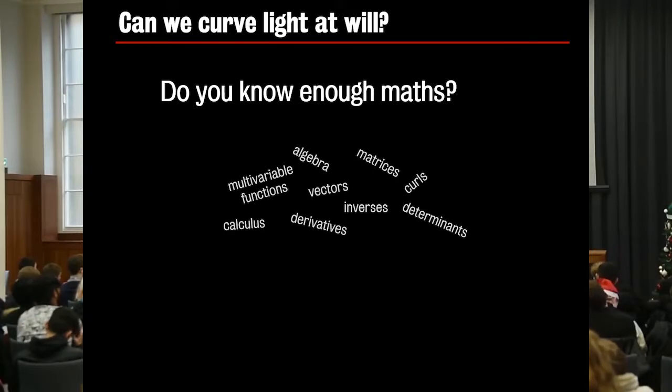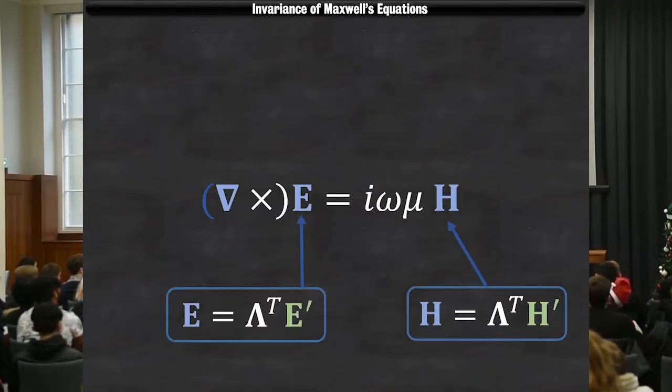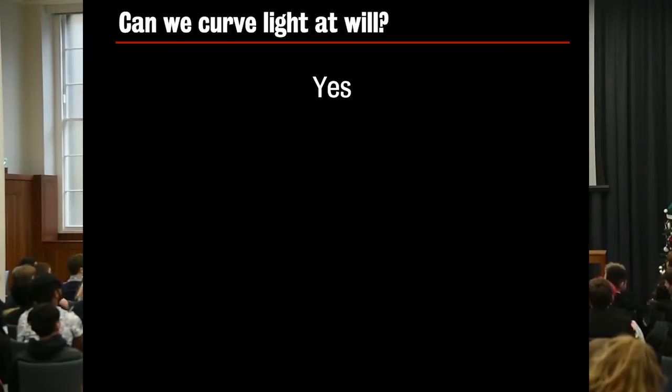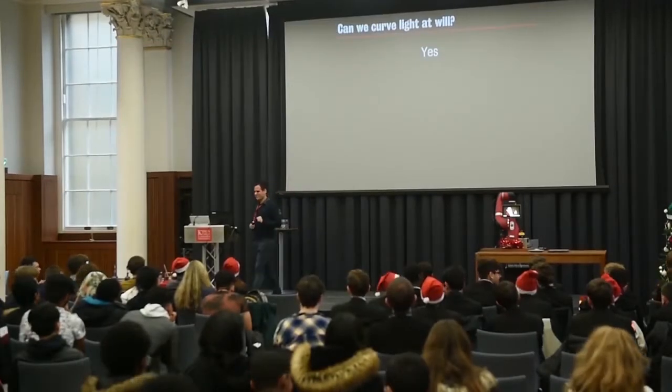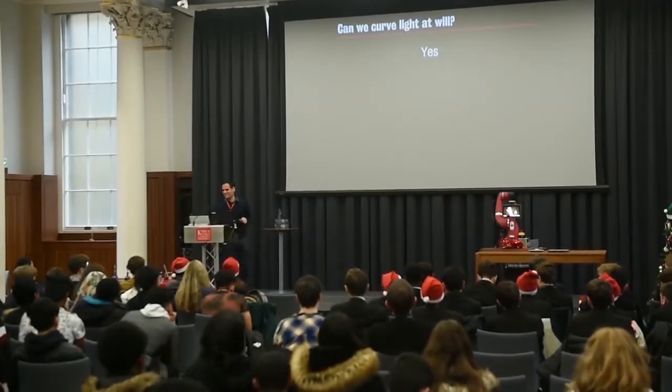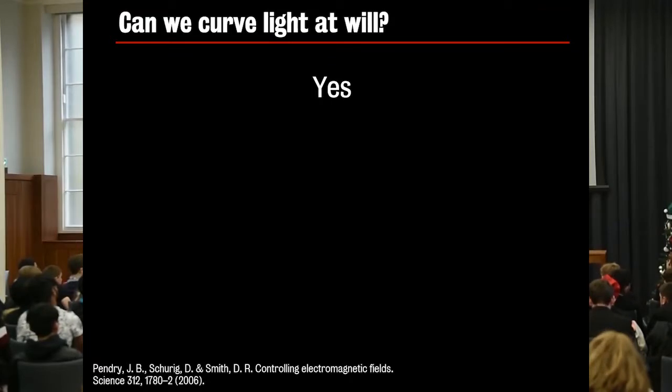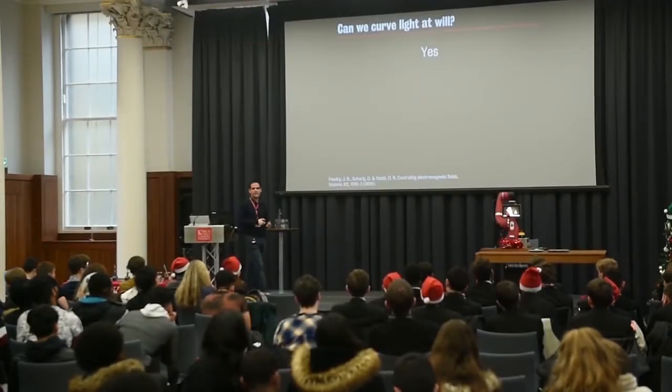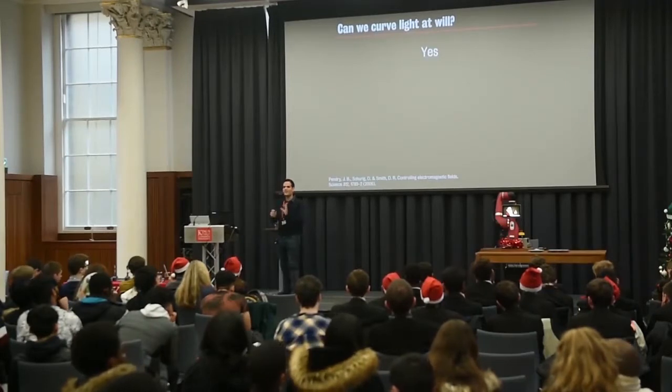So the question is can we curve light at will? And maths helps us. We do this. Yeah, we cancel that out. Of course. Trivial. Easy. Yes. So maths answers yes. If you want the details because you are very good at maths, you can go and read this paper, Controlling Electromagnetic Fields in the journal Science. One of the best journals or the best journal in all of science. So the answer is yes.